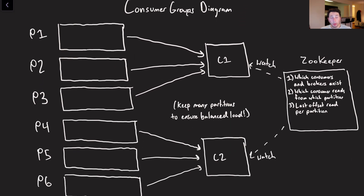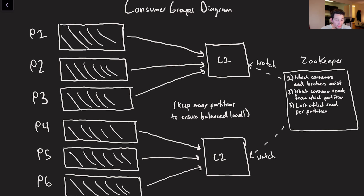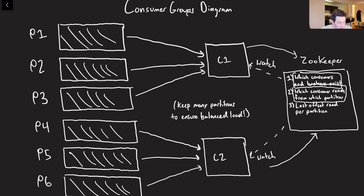What does this actually look like in practice? Of course we're going to have to have some sort of consensus involved, because ultimately if one of these consumers goes down, someone has to replace it when reading a topic. Up here on the left, we've got all of our different Kafka topic partitions, and then C1 and C2 are the two consumers that are part of a consumer group. The way that they say they're part of a consumer group is on startup, they go and register themselves with Zookeeper — which consumers and which brokers exist. Another thing that Zookeeper stores is which consumer is reading from which partition, and the last offset read per partition.